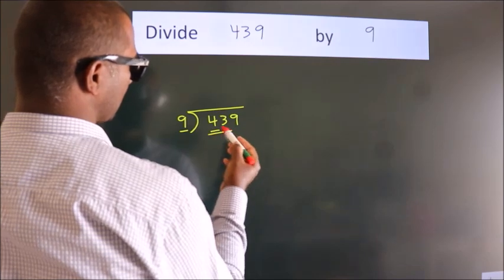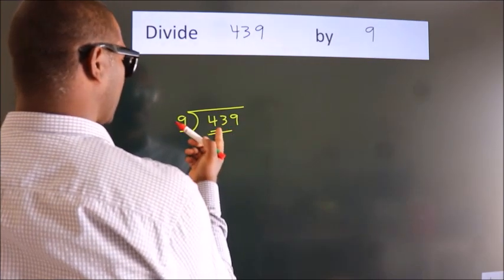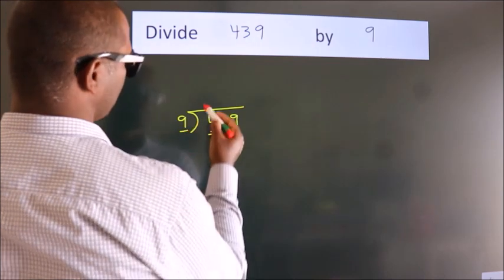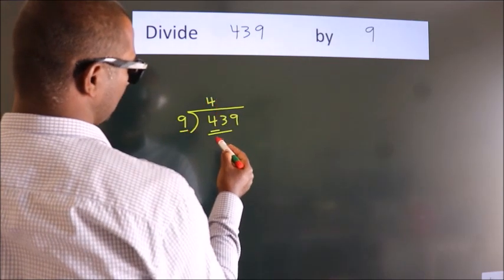should take two numbers: 43. A number close to 43 in the 9 table is 9 fours, 36.